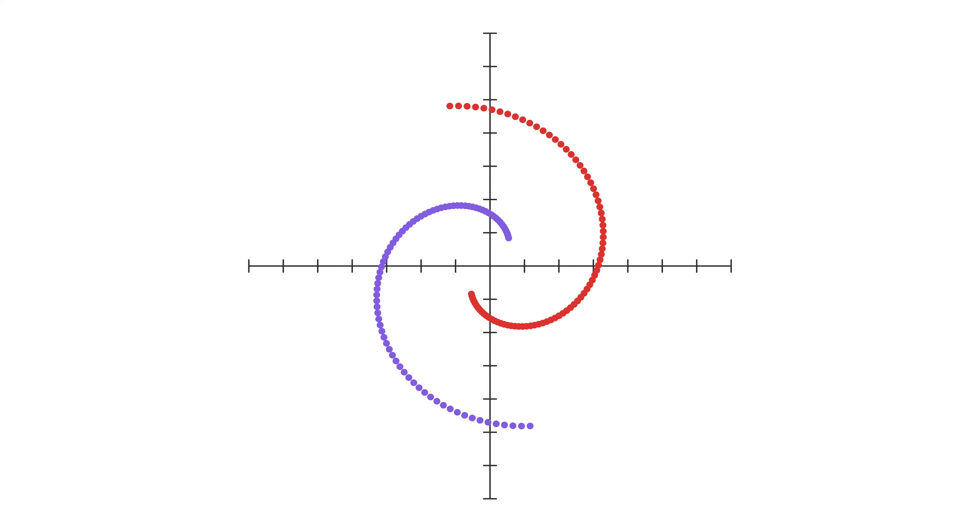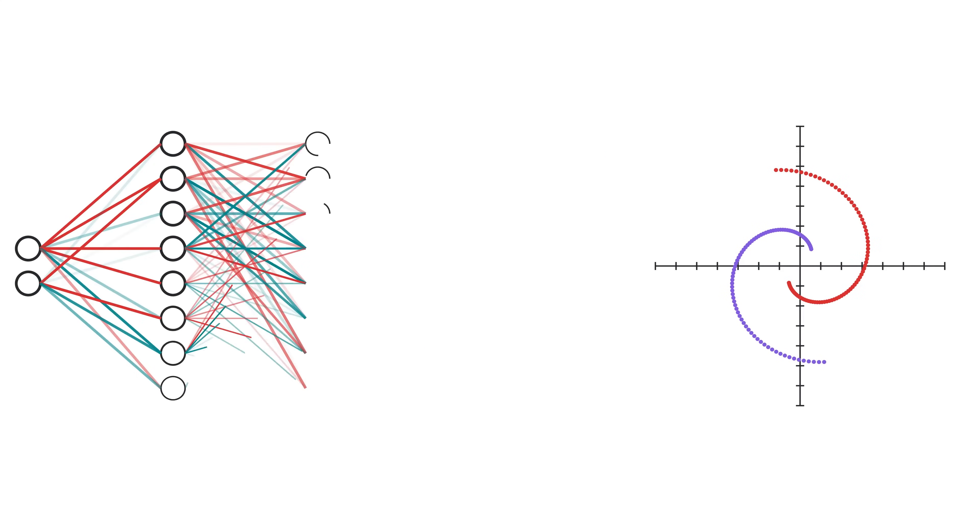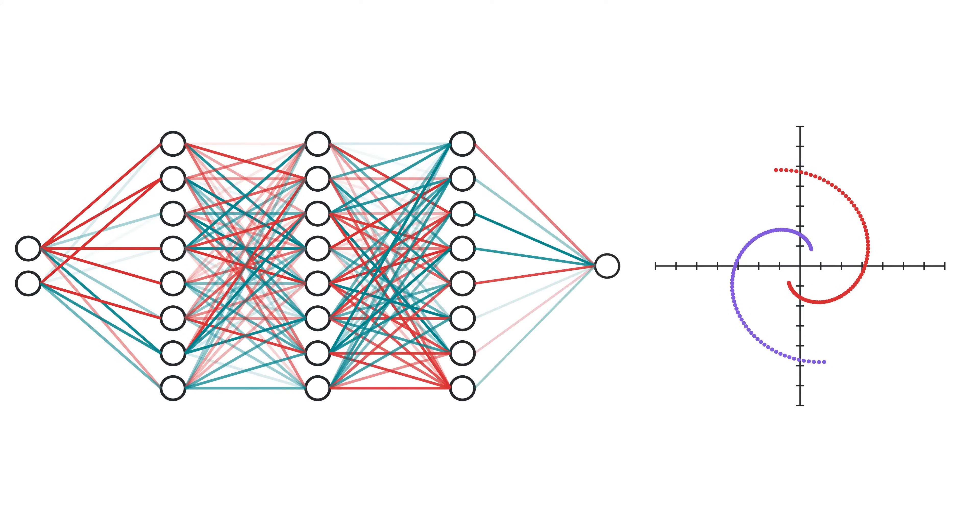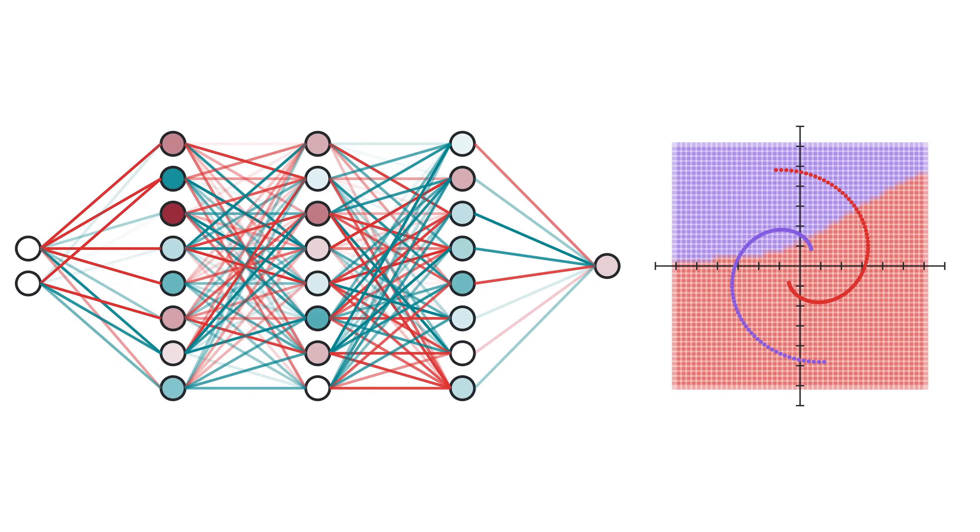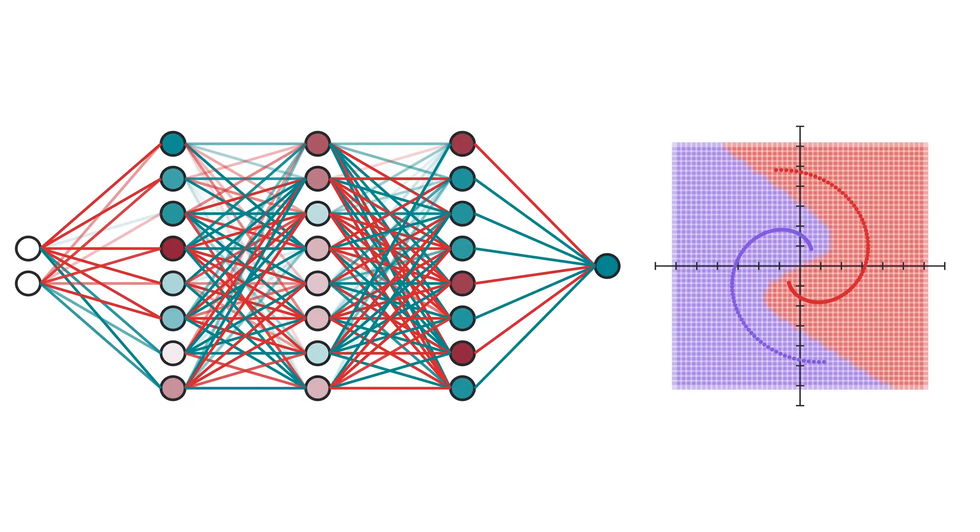I could just make a neural network that takes as input the x and y coordinates of the dot and outputs a value between 0 and 1, where 0 means it's purple, otherwise it's red, and the neural network will easily reach an error of 0. But our purpose here is to visualize what the neural network might actually be doing.